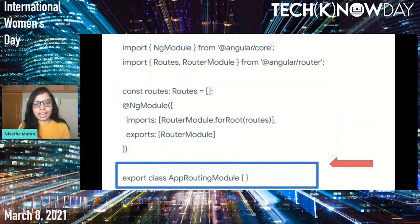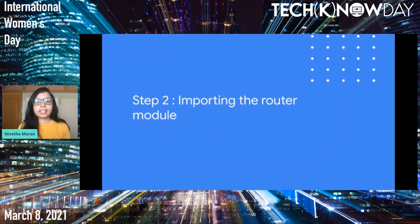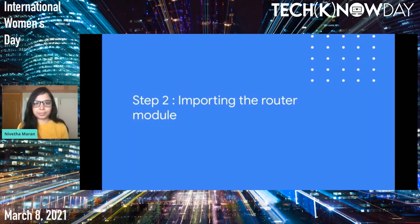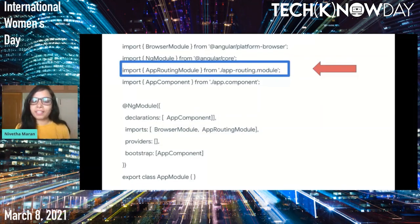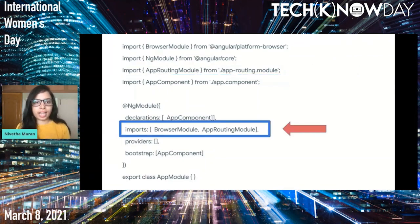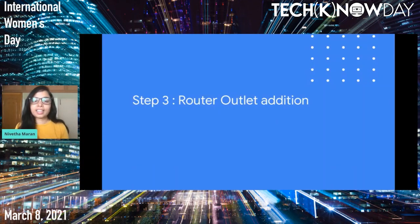Next, we want to import this created routing module in the main AppModule of our web application so that we can use it throughout the application. As seen here, we have imported AppRoutingModule in the highlighted code section and added it to the imports array of the main module. This is how we import the AppRoutingModule inside our main application.